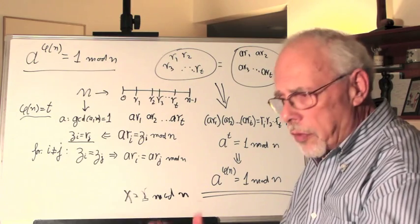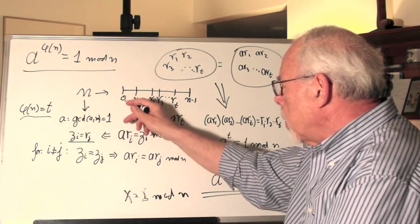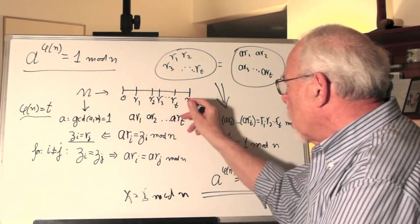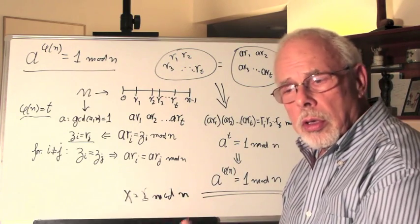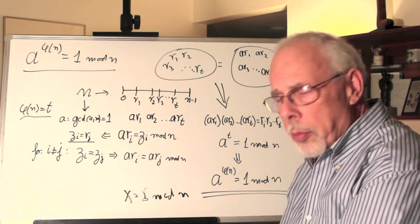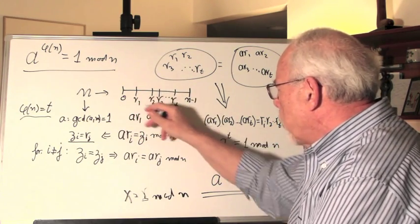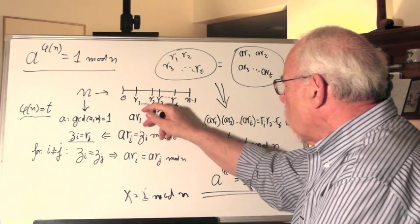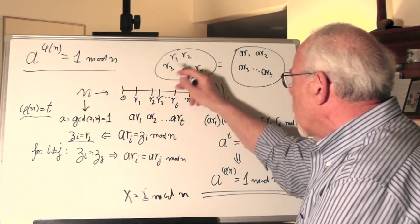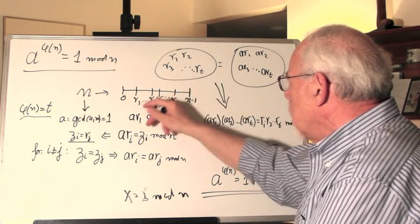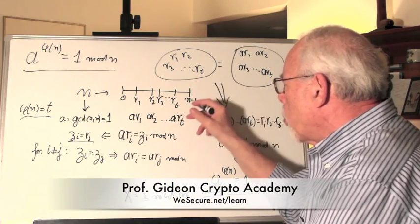R1 to Rt are those numbers that are co-prime with n. Depends on what n is. If n is a prime, then all the numbers up to n minus 1 are all co-prime with it. If it's a composite, it's fewer. But in any case, we can always define the list or the set of R1 up to Rt, the numbers that are co-prime with n.